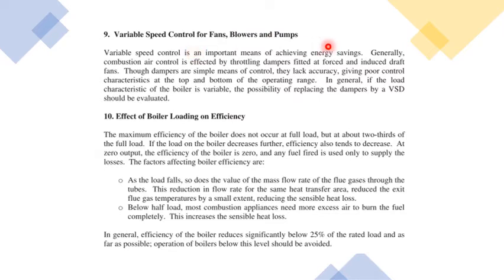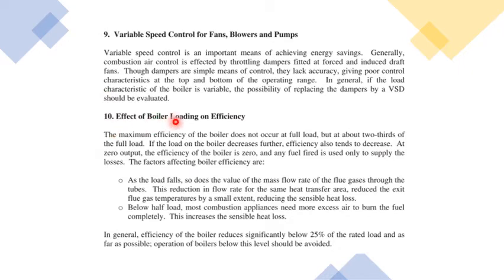The ninth point involves controlling fans, blowers, and pumps used as auxiliaries in the boiler using variable speed drives (VSD). By controlling these drives as per the actual air and water requirements, wastage is eliminated, leading to optimum supply and better overall boiler efficiency. The tenth point is the effect of boiler loading on efficiency — running the boiler at very low load leads to poor efficiency, so it should be run at an optimum load.